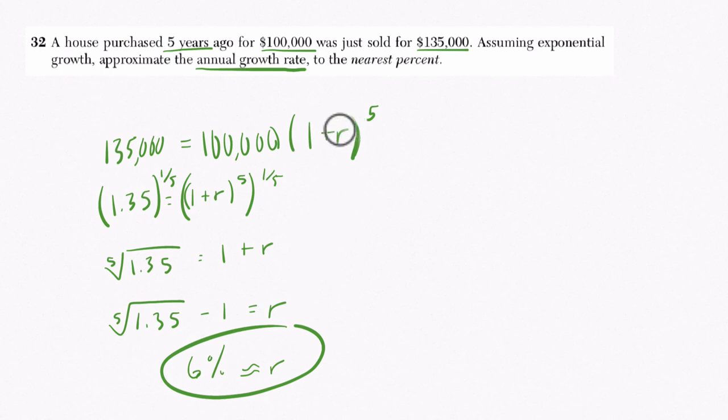You can test it out. Plug in 6%, start at $100,000, multiply by 1.06 five times, and you will get $135,000. Thanks, hope this helped.